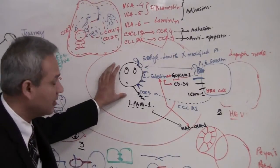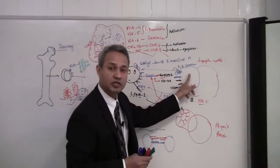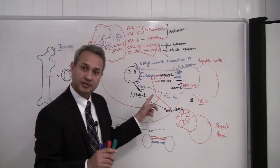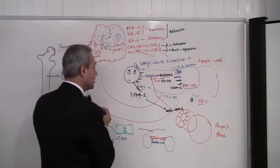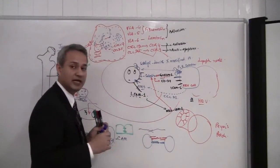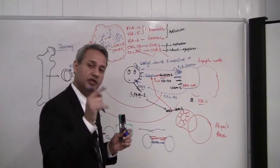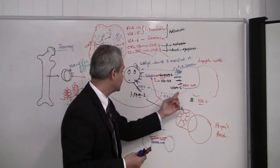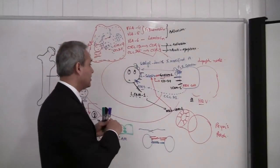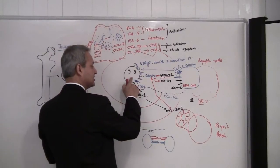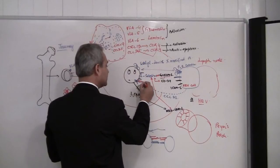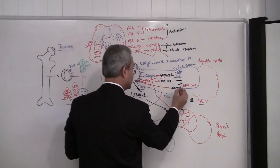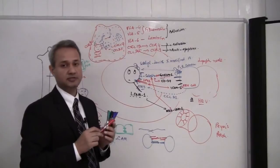The T cell has a corresponding receptor called CCR9. Once the T cell reaches near the high endothelial venular cell and the cell is secreting CCL21, this activates the CCR9 receptor. This only happens at the high endothelial venule of a lymph node or Peyer's patch. As soon as this chemical interaction occurs, the naive T cell causes its integrins — LFA-1 — to connect with ICAM-1.